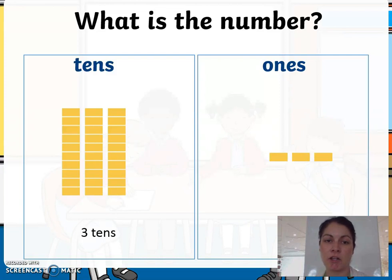In the next slide we have to count our tens. We have one ten, two tens, three tens. Three tens is equal to thirty. Then we count our ones: one, two, three. So three tens plus three ones is equal to thirty-three.